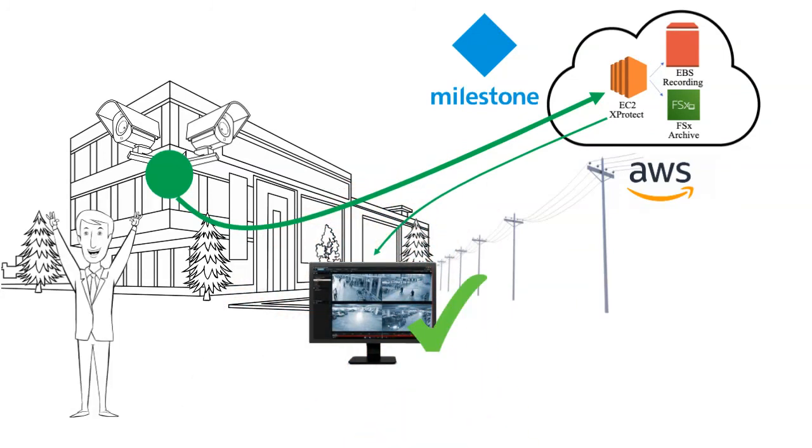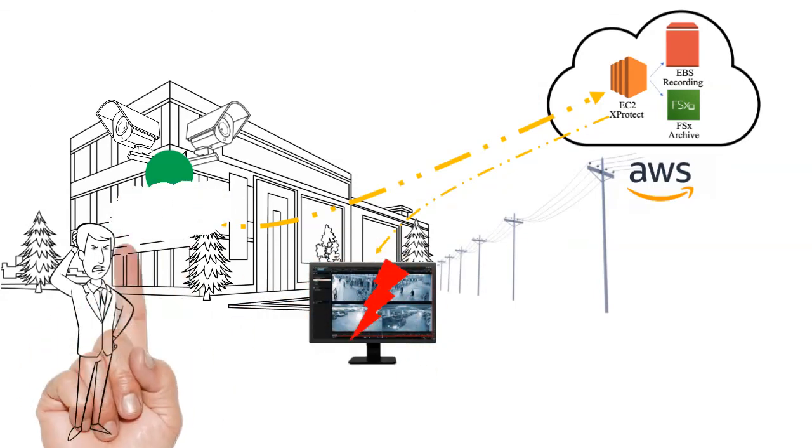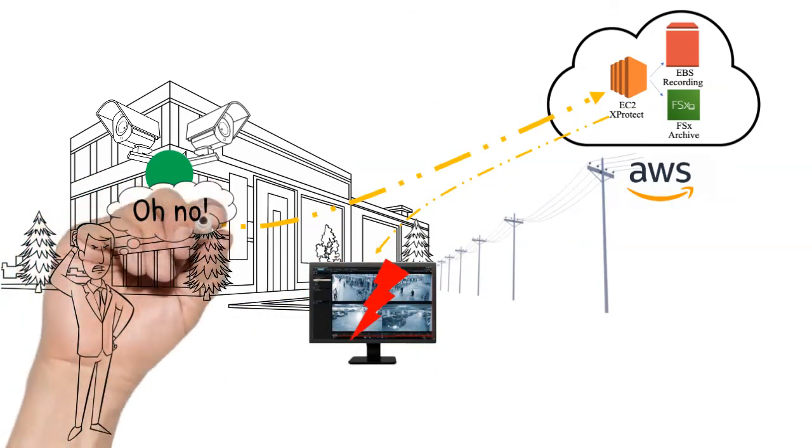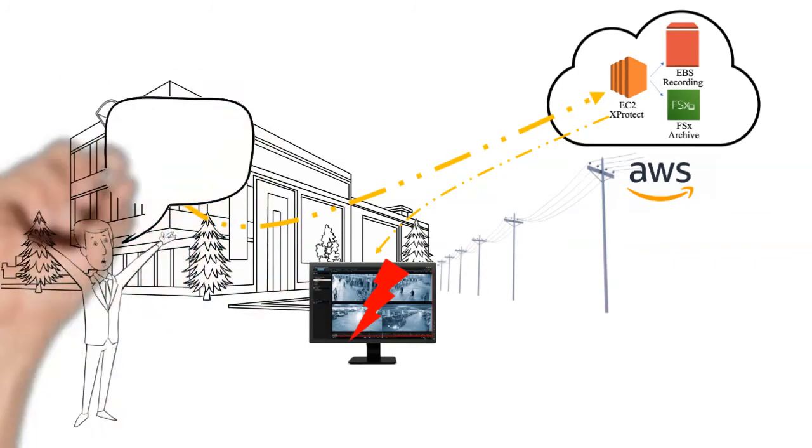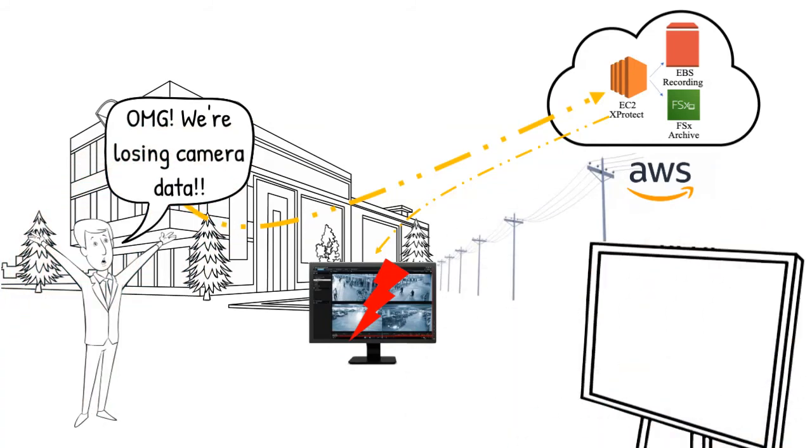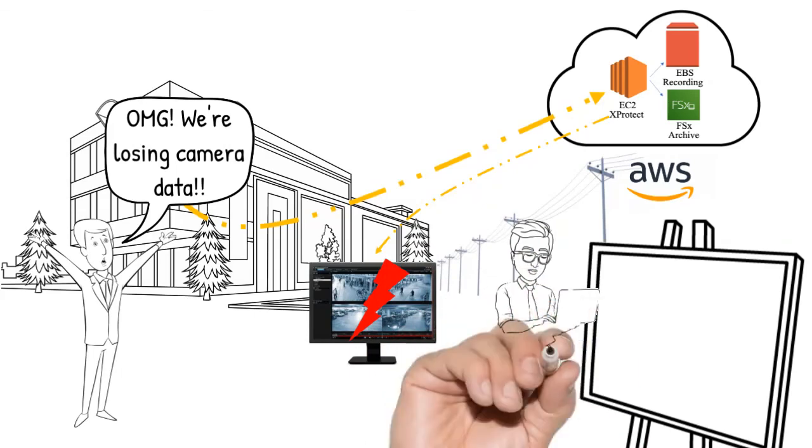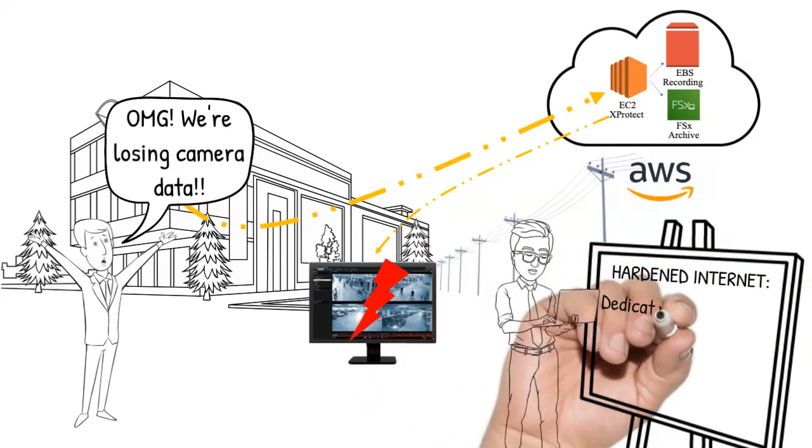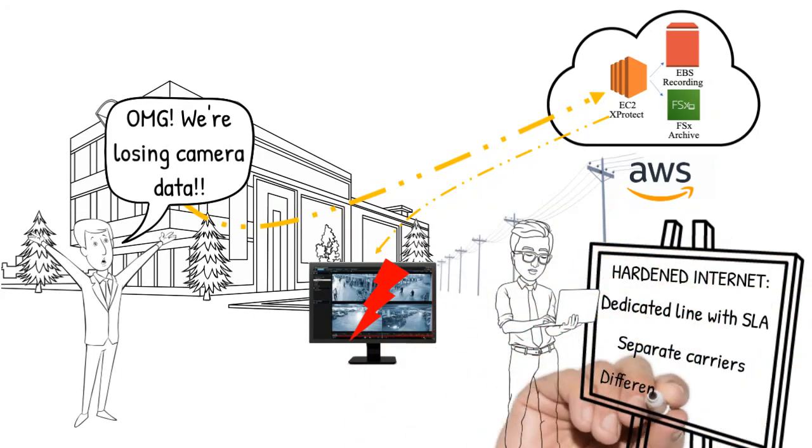If your connection can sustain the throughput for all your cameras plus all the viewing you'll be doing at the same time, you're golden. However, if you're on a shared internet connection like most companies and the connection lacks even for just a few seconds, any camera data that cannot make it to the AWS instance in real time will be lost forever.